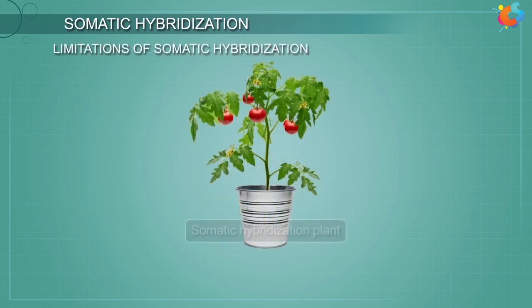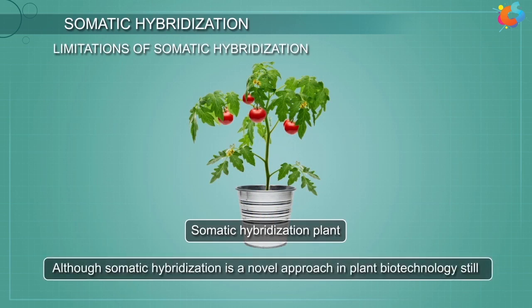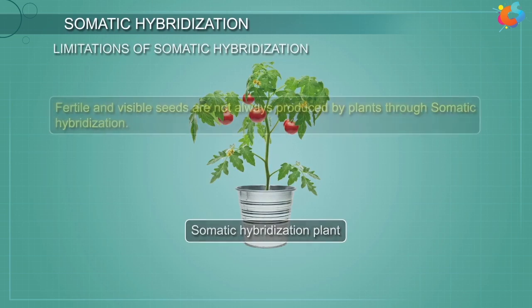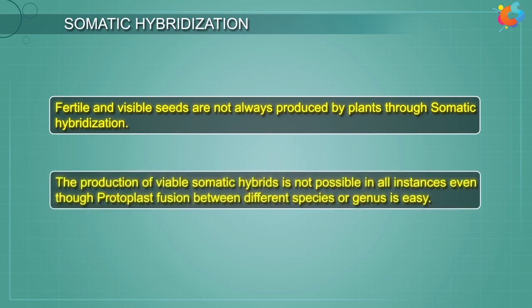Limitations of somatic hybridization. Although somatic hybridization is a novel approach in plant biotechnology, still there are several problems and limitations where the method is non-rewarding. The success of the technique largely depends on overcoming these limitations. Fertile and viable seeds are not always produced by plants through somatic hybridization. The production of viable somatic hybrids is not possible in all instances, even though protoplast fusion between different species or genus is easy.